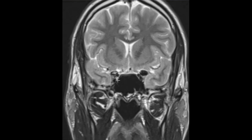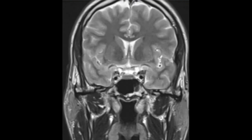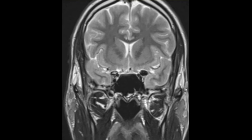Here is another view — the clinoid process on the right and the pneumatization on the left. You can see the carotid artery coming right up to it. When we are not confident, which is pretty common, we will go ahead and get an MRA of the head to make 100% sure this is not an aneurysm.